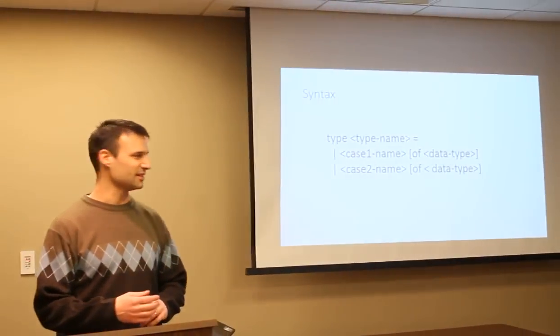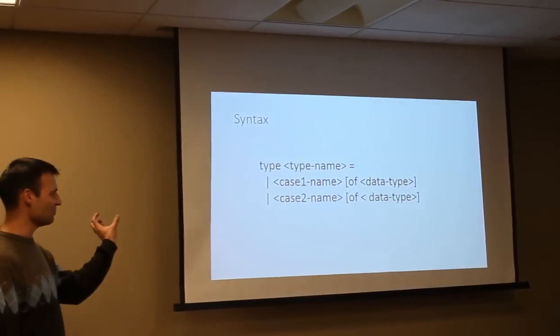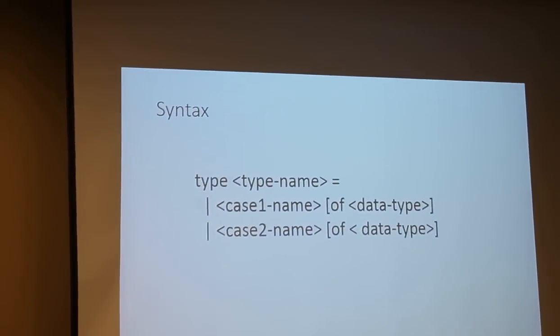So we're just going to jump right straight to the syntax here. This is the general syntax: you get type, give it a name, equals, and then you get case, so it's going to look a lot like an enumeration.